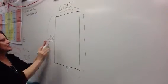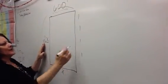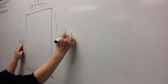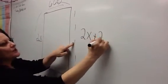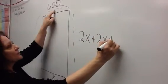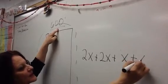So, what I'm going to do is add up the perimeter, and I'm going to have 2x, plus the other side is 2x, plus x here, and plus x here.